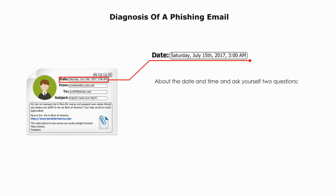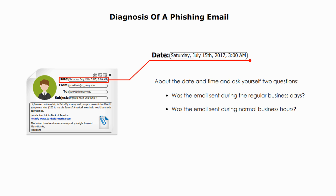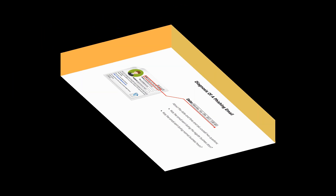About the date and time, ask yourself two questions: 1. Was the email sent during regular business days? 2. Was the email sent during normal business hours? In this example, the day and time were quite unusual, which raises a red flag. But considering the sender's situation, it was understandable, but still weird since the sender wrote the email at 3 a.m. in the early morning.